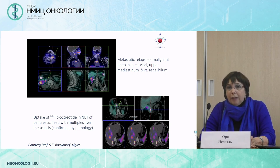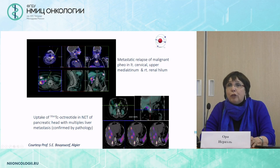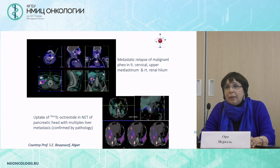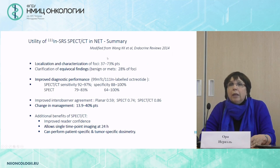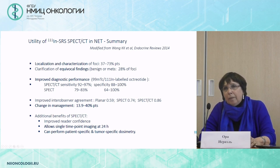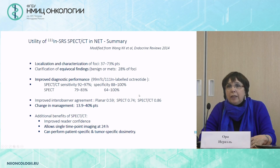These slides provided by Professor Bouyoucef from Algiers show a metastatic pheochromocytoma with sites of metastasis in cervical lymph nodes, the mediastinum, and the renal hilum. Also shown is another patient with a neuroendocrine tumor of the pancreatic head with multiple liver metastases confirmed by pathology. To summarize, SPECT-CT can help in localizing and characterizing the majority of foci of neuroendocrine tumors with very high sensitivity and specificity.